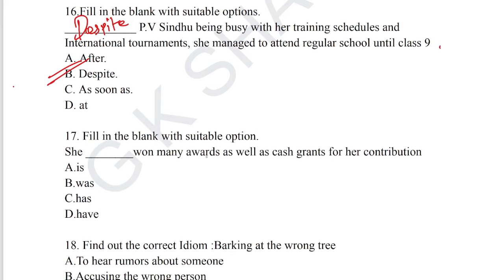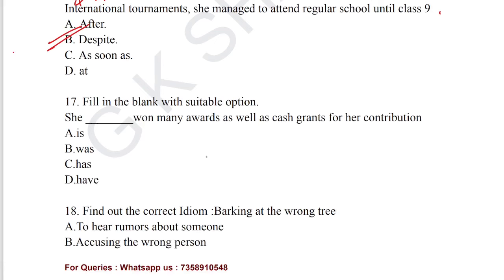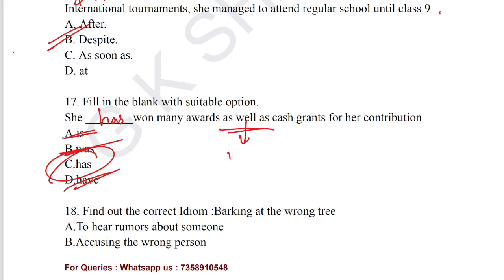Question number 17: fill in the blank with suitable options. 'She has won many awards as well as cash grants for her contribution.' 'Has won' is the most grammatically correct usage. Option C is the correct answer. 'As well as' is nearly equal to 'with' — they serve similar functions in subject-verb agreement.